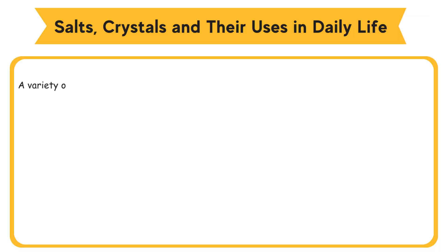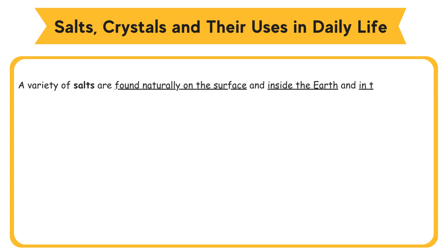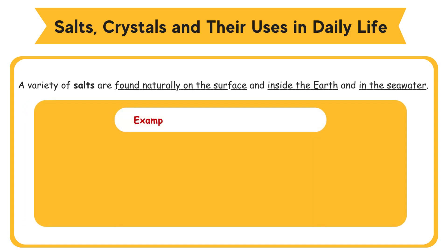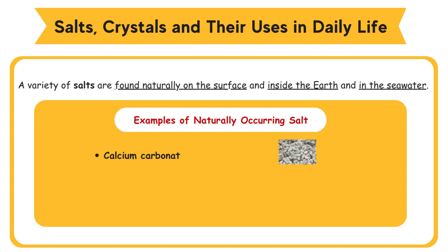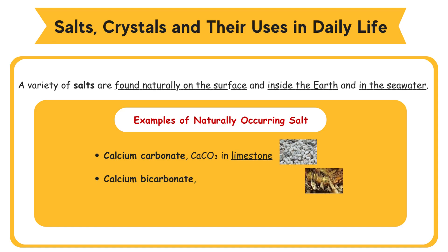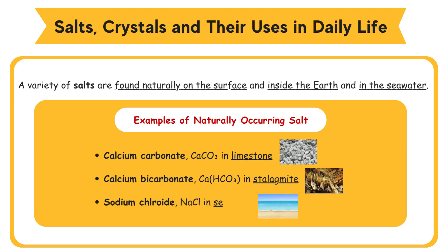A variety of salts are found naturally on the surface and inside the earth, and in the seawater. Examples of naturally occurring salts: Calcium carbonate, CaCO3, in limestone. Calcium bicarbonate, Ca(HCO3)2, in stalagmite. Sodium chloride, NaCl, in seawater.